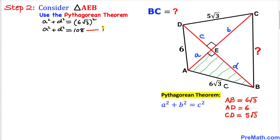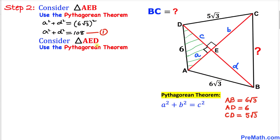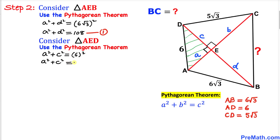Now let's focus on the next right triangle AED. Since this is a right triangle we'll use the Pythagorean theorem again. The longest leg is 6, so applying the theorem gives us a² + c² = 6² = 36. We'll call this Equation 2.